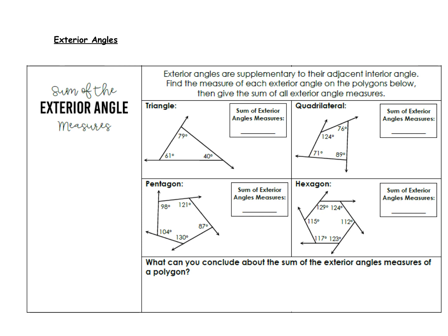The exterior angles of a polygon — more importantly, the sum of the exterior angle measures. Exterior angles are supplementary to their adjacent interior angle. Supplementary being the key word here, means adds up to 180 degrees. That is an important definition, an important property that we need to remember.